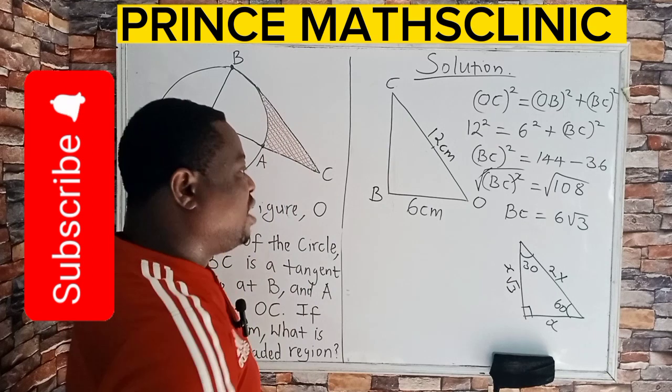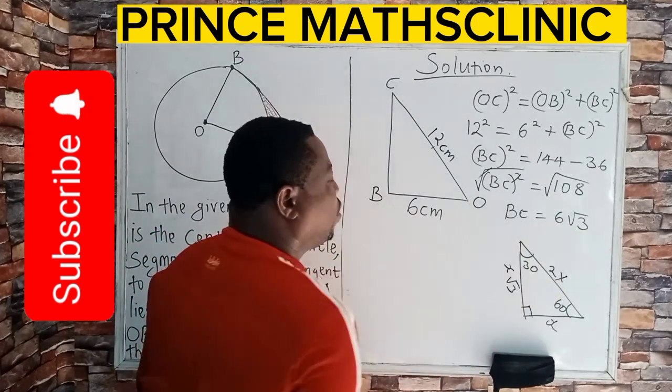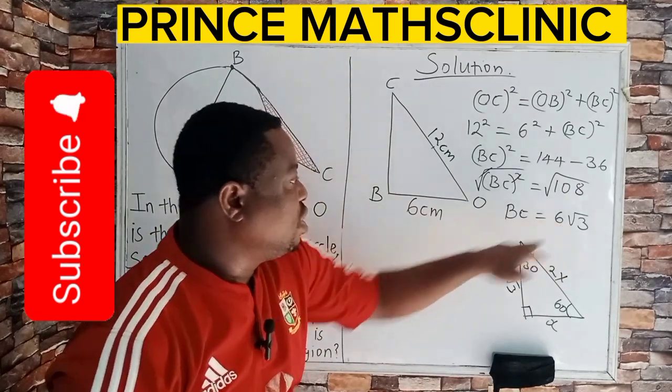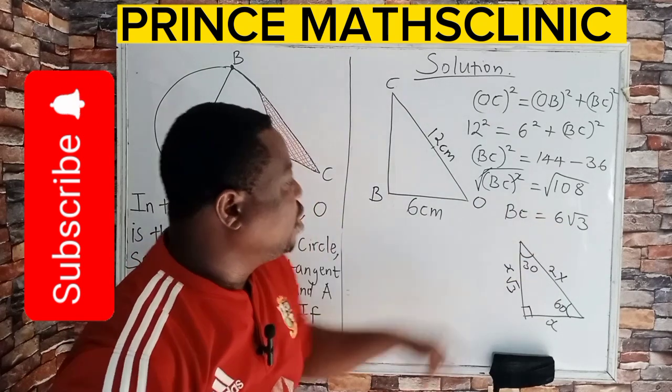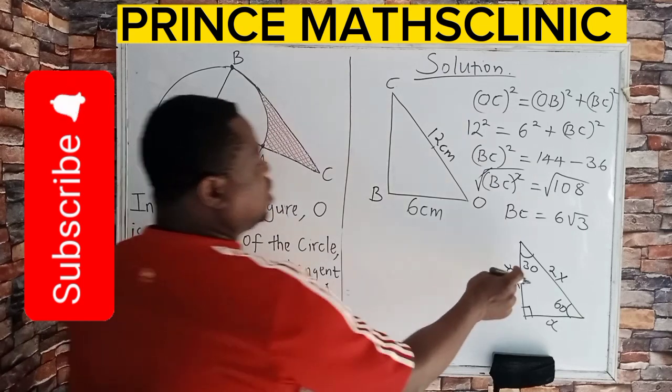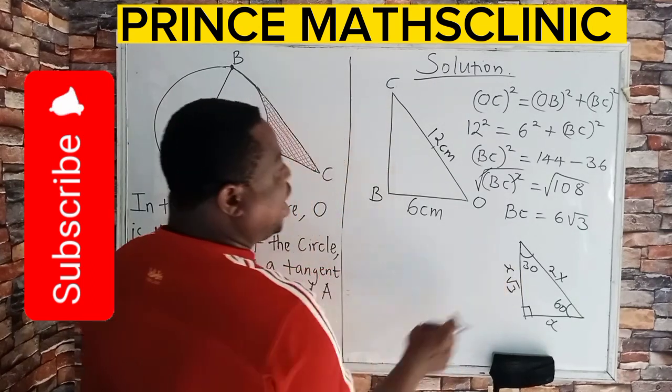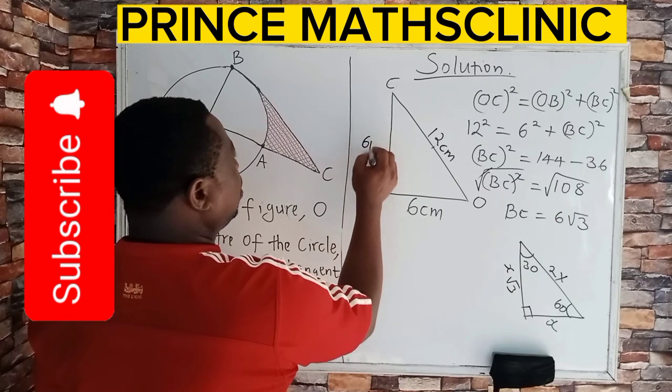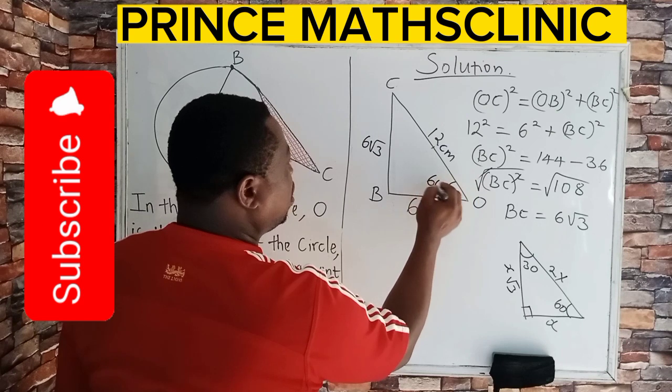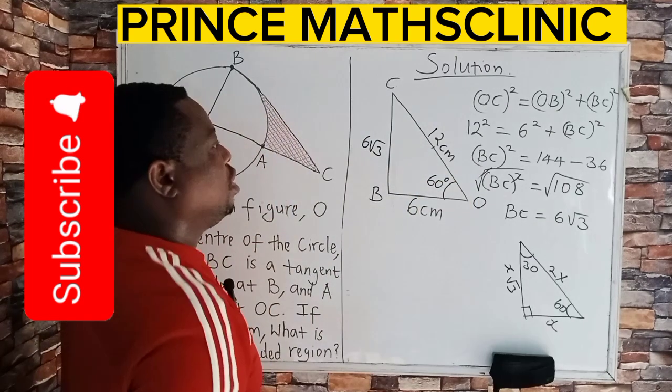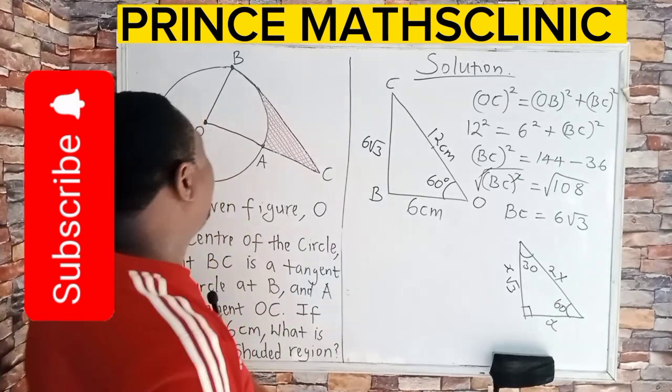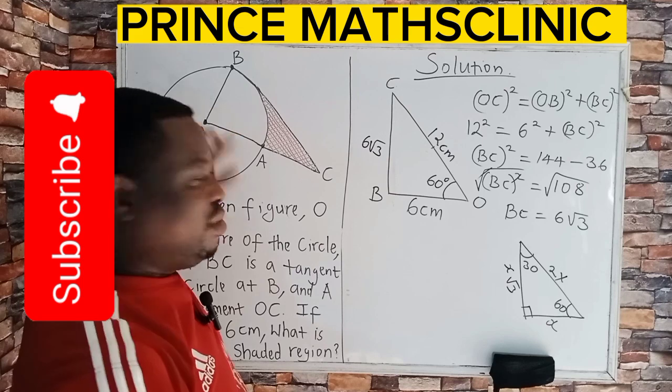So look at it, x root 3. So comparing now, x root 3 to this particular side 6 root 3. So it means that if this is x root 3, remember we got this at 6 root 3, the side facing this angle, therefore, will become 60 degrees. Now, I'm looking for that angle because I will need it in the solution. Good.